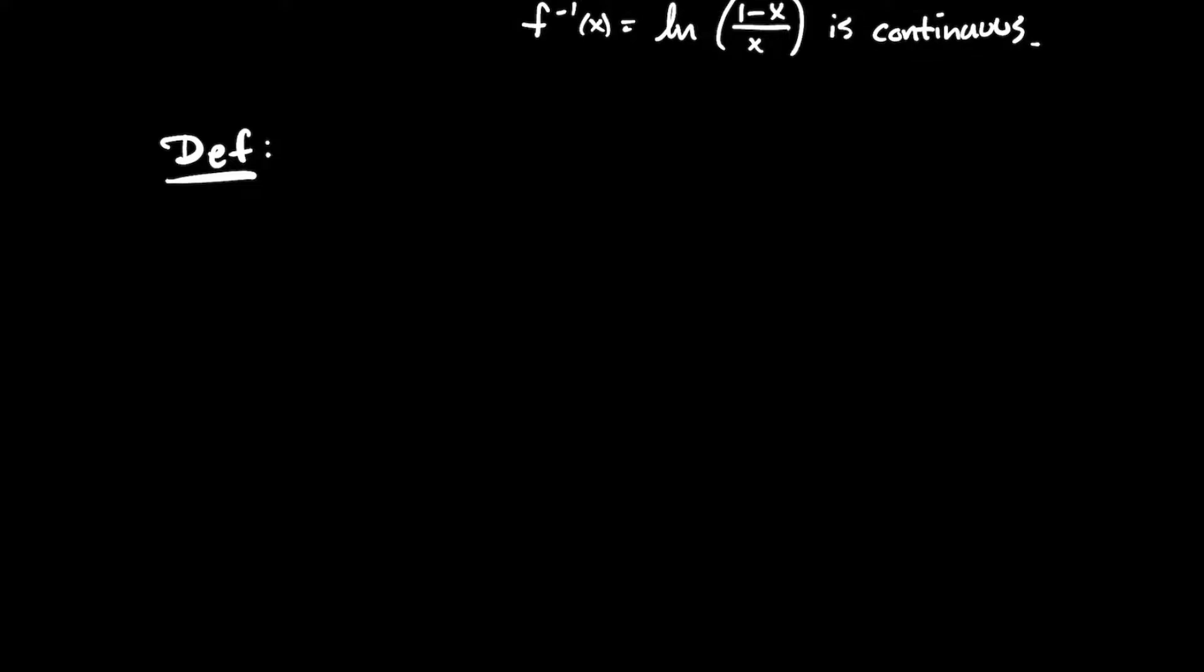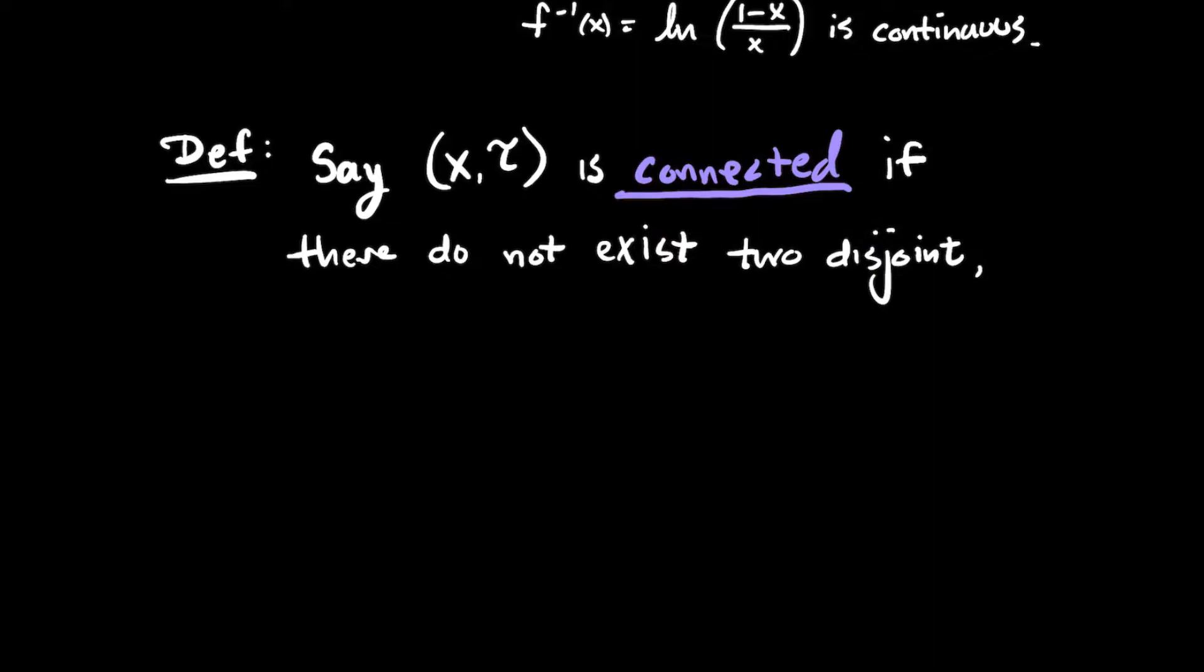So you feel great about homeomorphisms now. I hear you. That's fantastic. So now let's talk about what it means for a topological space to be connected. So we're going to say that a topological space X, so the set is X and its topology is T, we're going to say the space is connected if there do not exist two disjoint, non-empty sets U and V that are open, so they're in the topology on X, such that X is the union of U with V.